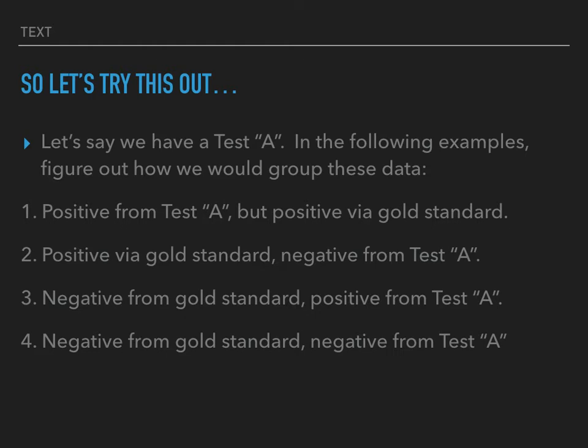Example two: positive via gold standard, negative from Test A. Positive and negative — do those agree? No, they don't. So we got a false. But a false what? We got a false negative, because it was negative from the testing question, or Test A.